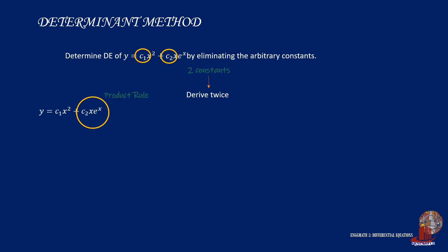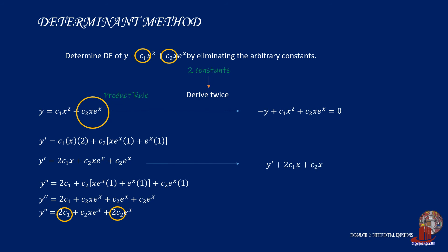So take y prime as solved in the previous video, which would turn out as y prime is equal to 2 times c1 x plus c2 x times e raised to x plus c2 times e raised to x. Then derive further to have the second derivative of y, which would be y double prime is equal to 2 times c1 plus c2 x times e raised to x plus 2 c2 times e raised to x. The constants c1 and c2 are still around, so arrange the functions to have them equated to zero.